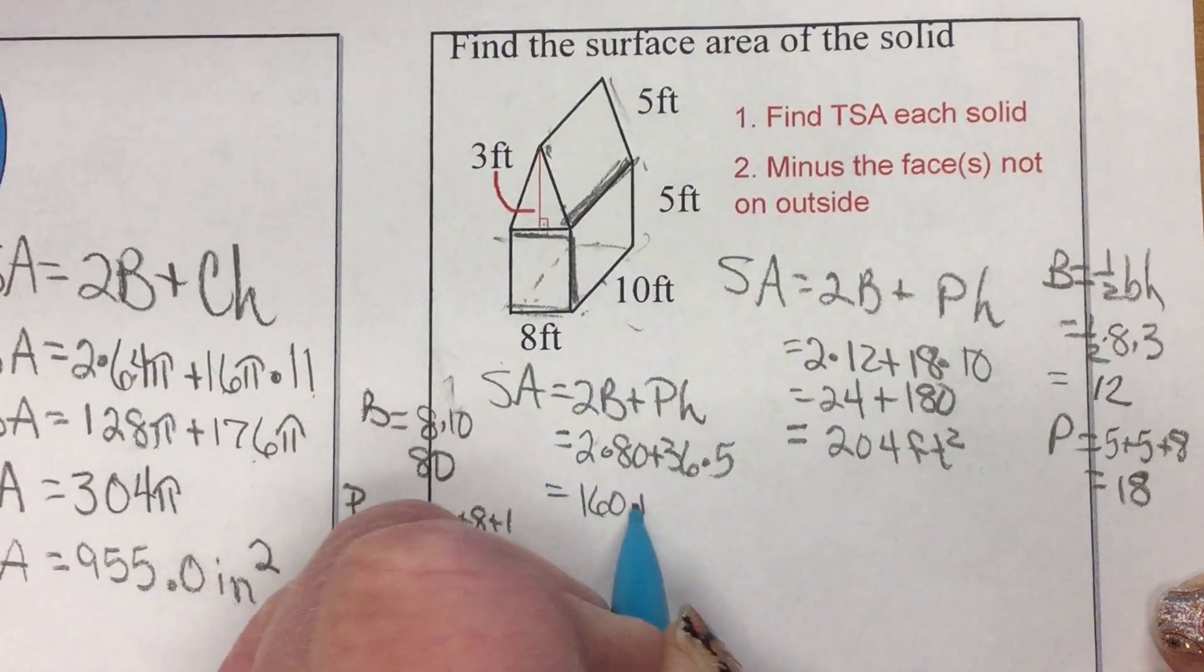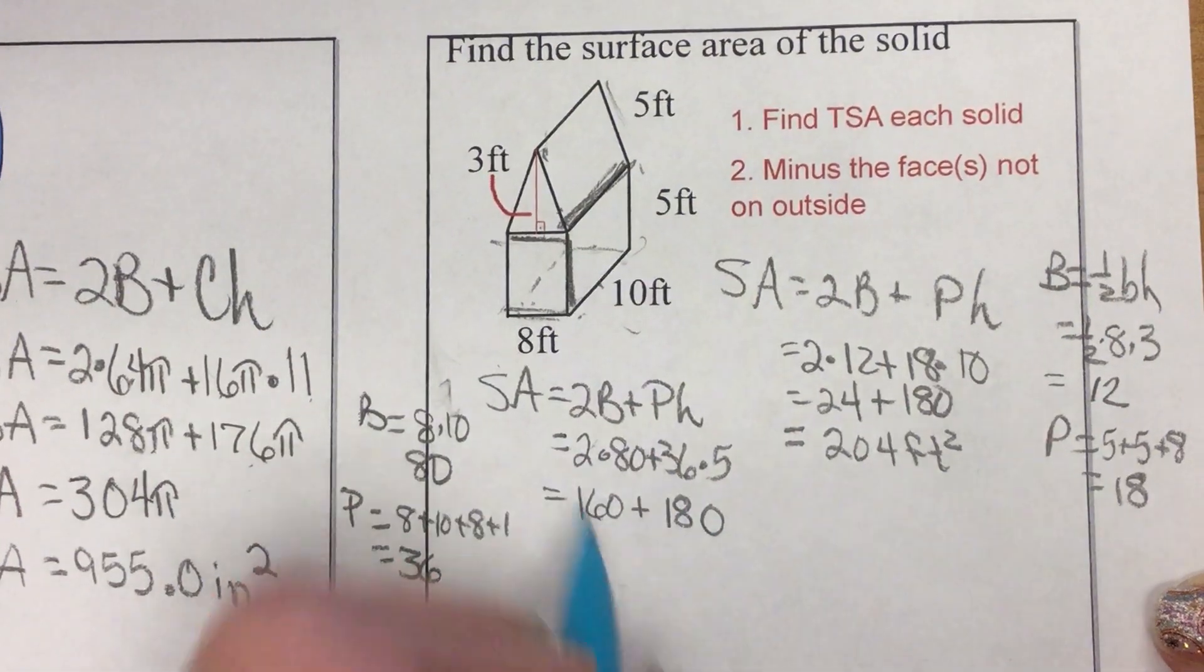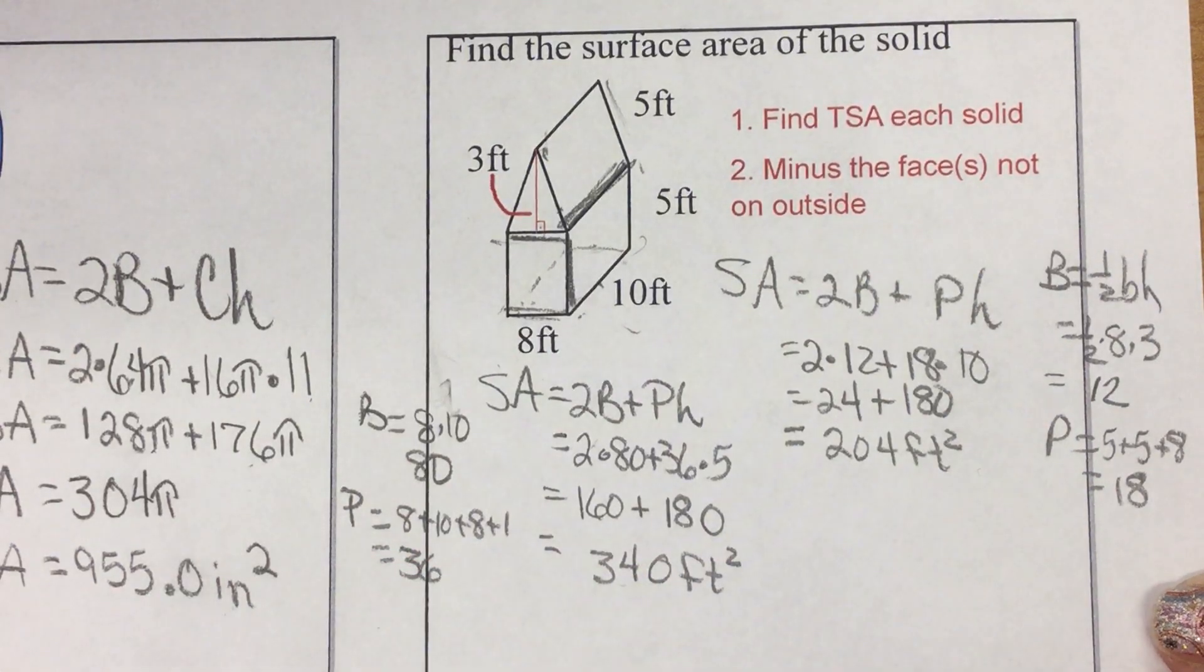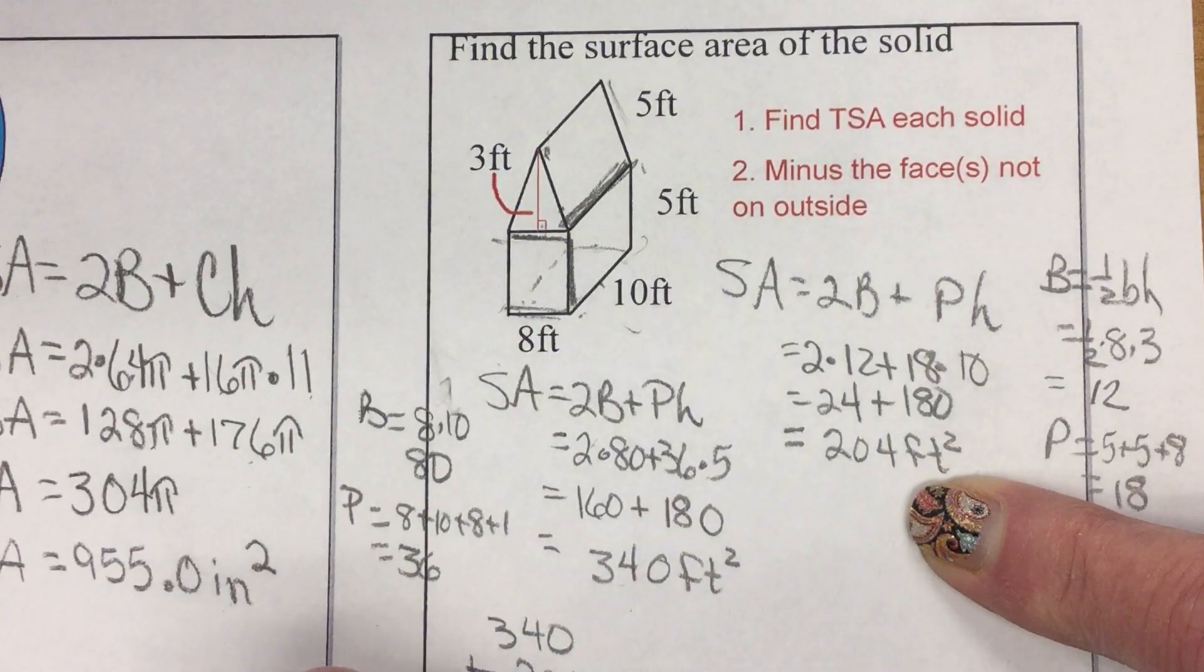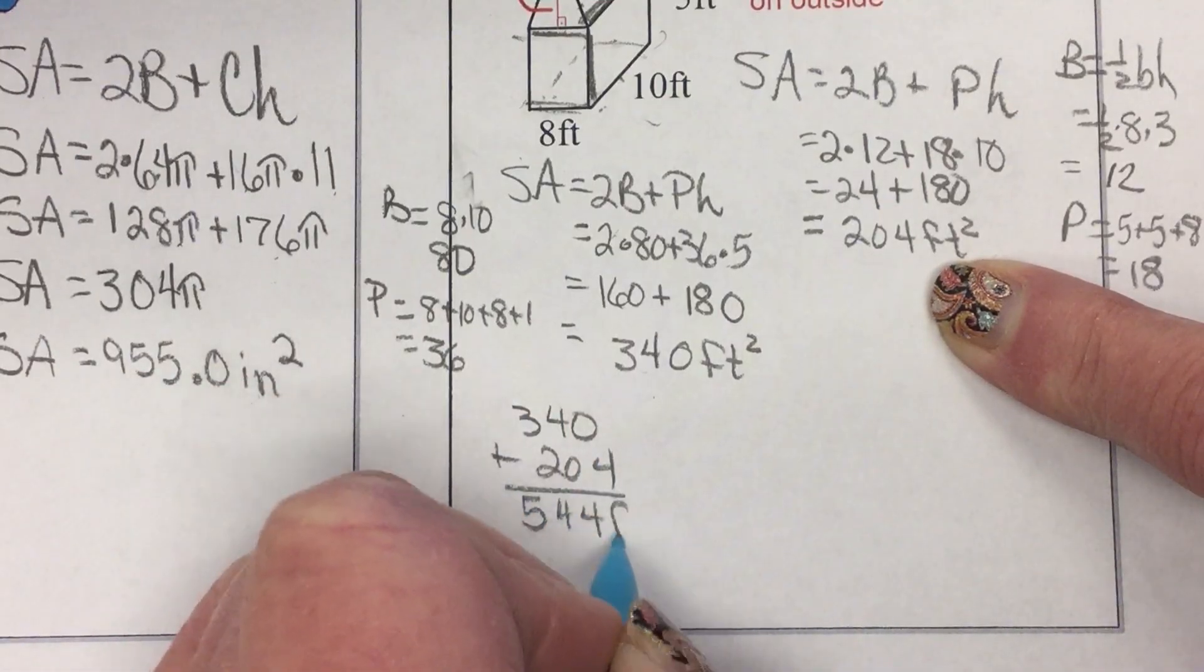So, 160 plus 180, an area of 340 square feet. So, together, 340 plus 204, 544 square feet.